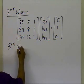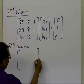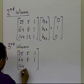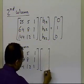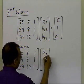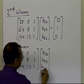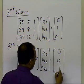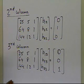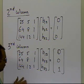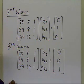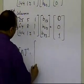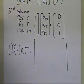For the third column, do the same thing: the coefficient matrix is the same, and you solve for the third column of B equal to [0, 0, 1], the third column of the identity matrix. Use forward substitution and back substitution after LU decomposition. Eventually, assemble all three columns into the B matrix, which is the inverse of A.